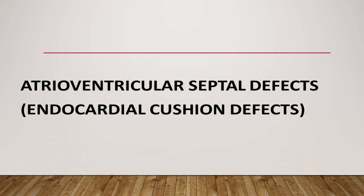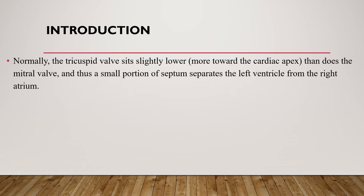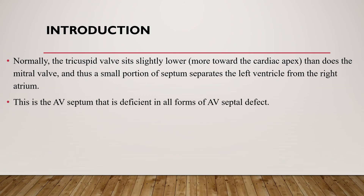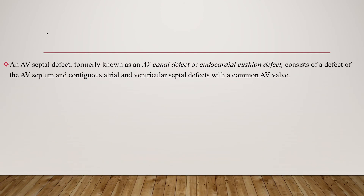The third shunt lesion is atrioventricular septal defect, also known as endocardial cushion defect. Normally, the tricuspid valve sits slightly lower toward the cardiac apex than the mitral valve, and a small portion of septum separates the left ventricle from the right atrium. This is the atrioventricular septum that is deficient in all forms of AV septal defect, and in most cases a cleft in the anterior leaflet of the mitral valve is also noted. An AV septal defect consists of a defect of the AV septum and a contiguous atrial and ventricular septal defect with a common AV valve.